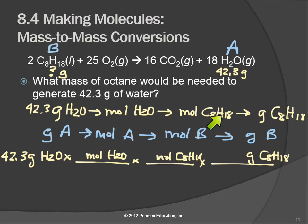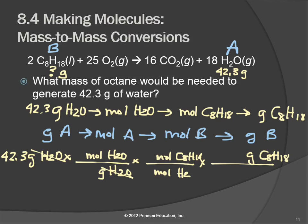The path: grams to moles to moles to grams. Grams of magnesium hydroxide → moles of magnesium hydroxide → moles of HCl → grams of HCl. That's the hard part — getting the path. Once you have the path, it tells you what to do. We ask the map like Dora, and the map says: convert grams of magnesium hydroxide to moles of magnesium hydroxide, then to moles of HCl, then to grams of HCl.